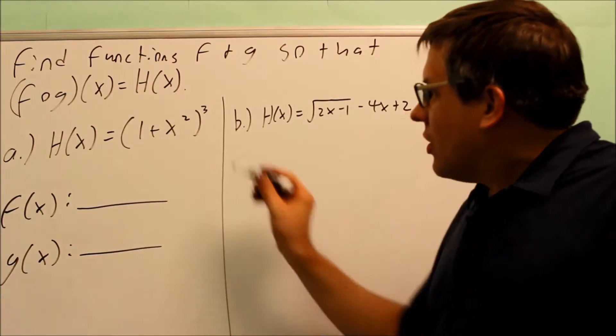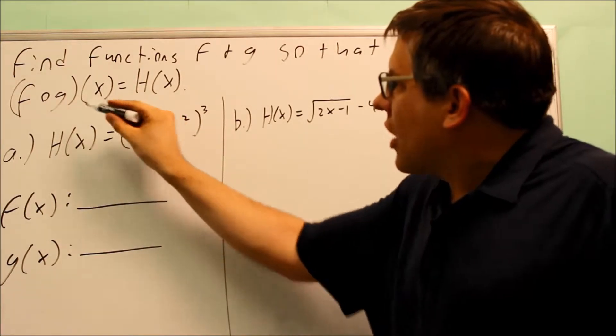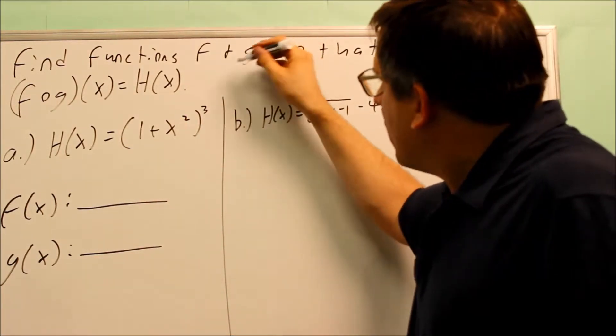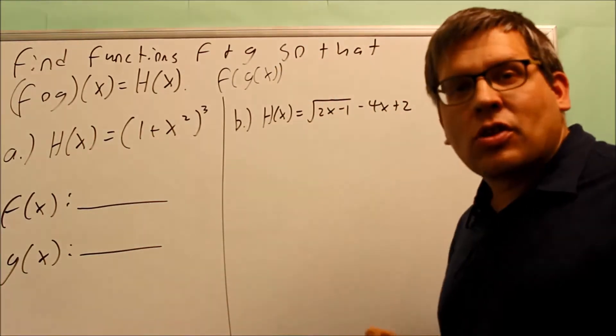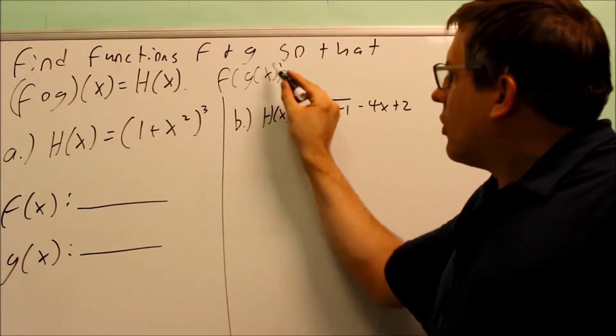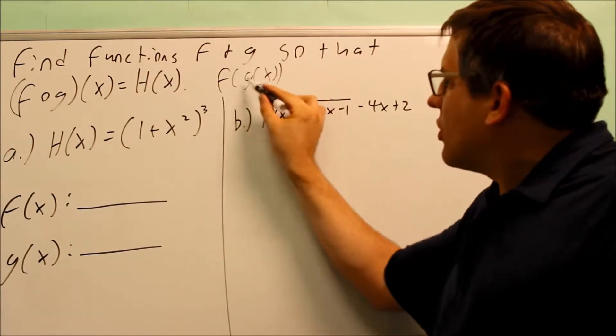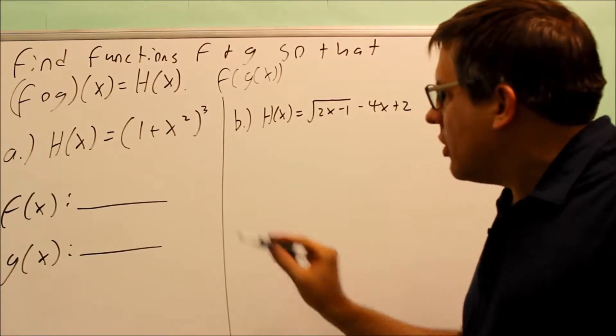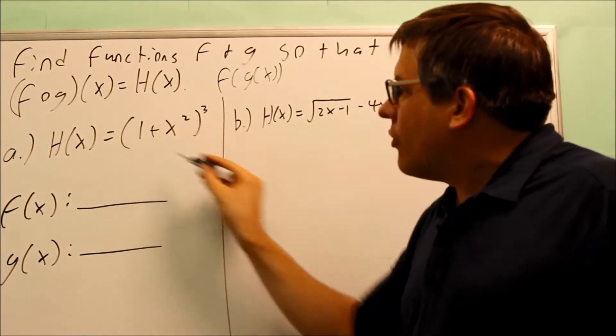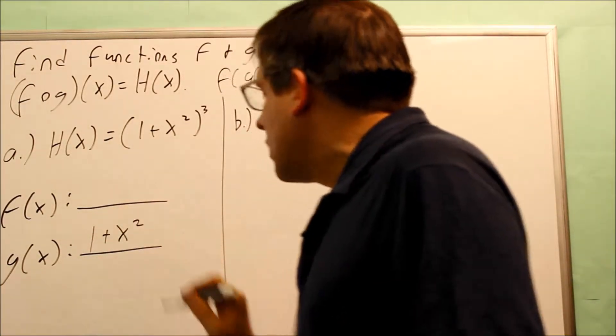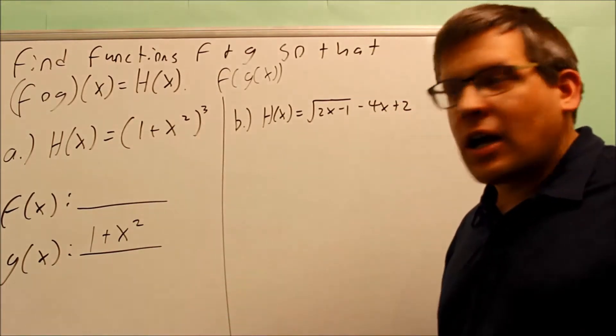So what you're going to do is you first look for what is on the inside. What is f of g of x mean? Well, that really means that you're putting a g into the f. I want to look for something that is inside of something else. What I noticed here is inside these parentheses I do have an expression—that expression is 1 plus x squared. So whatever you see on the inside of something, automatically that's going to be your g of x.